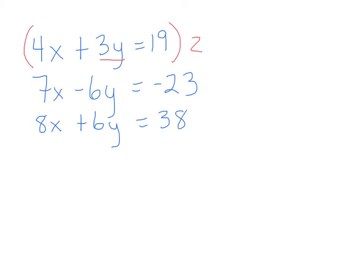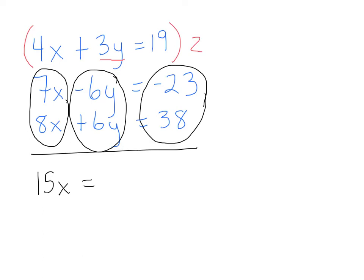And now look what you notice. Now we're going to ignore the top equation. And now we're just working with these two bottom equations. And now I can solve it just like I did before. I can add up the 7x plus the 8x, and what do I get? 15x. And I can add up the negative 6y plus the 6y, and I get 0. So it equals 38 plus negative 23 is 15.